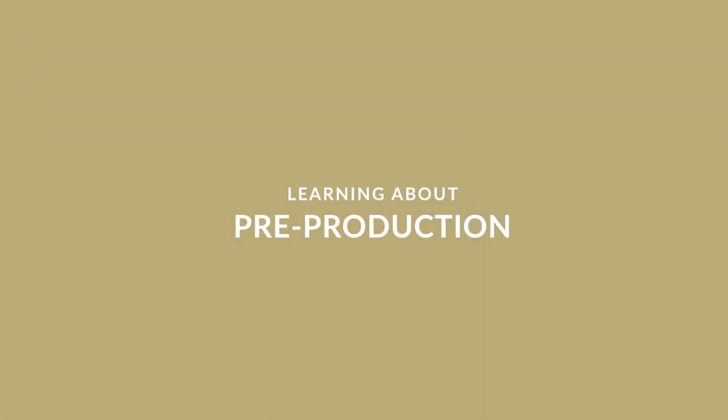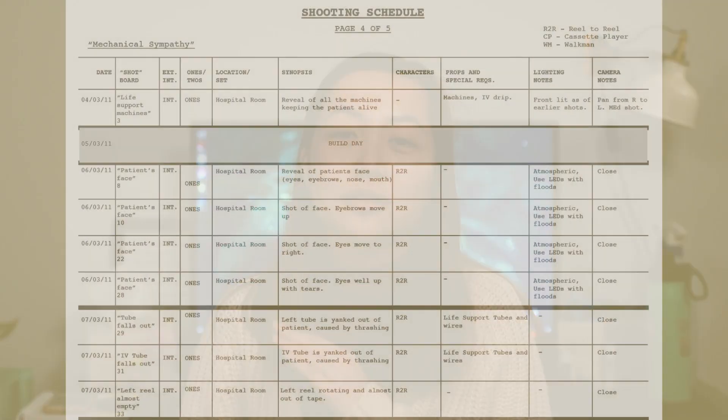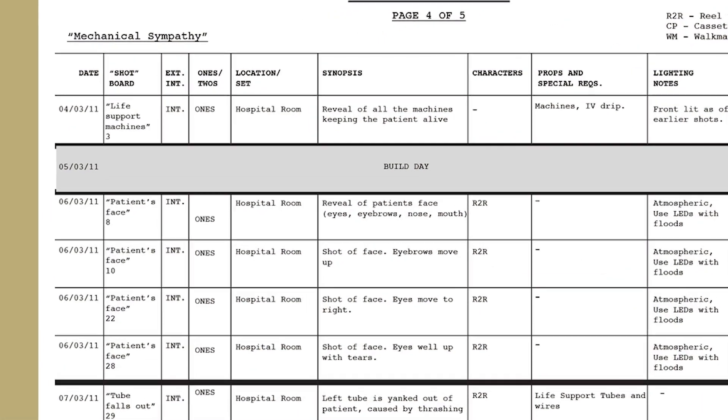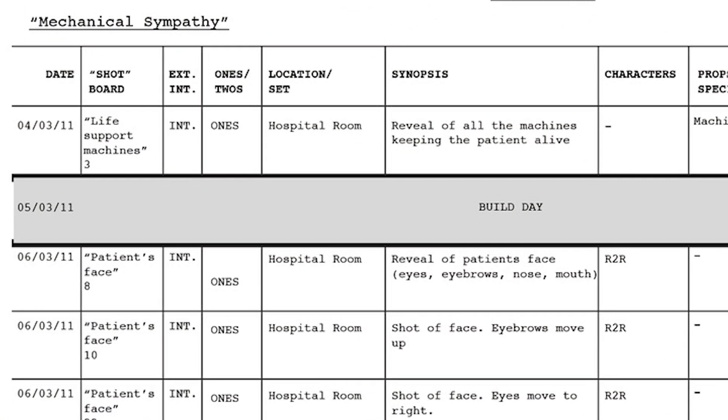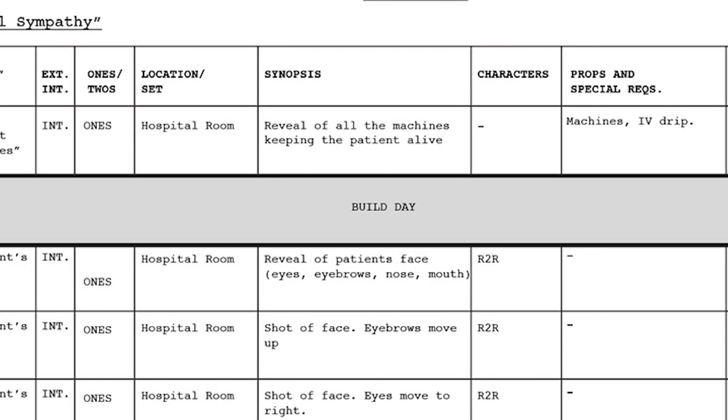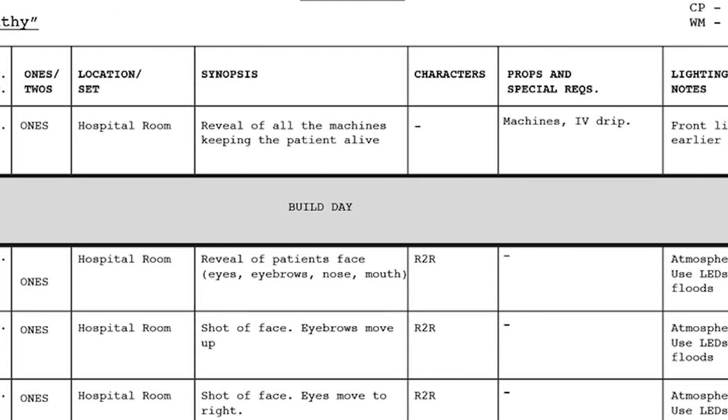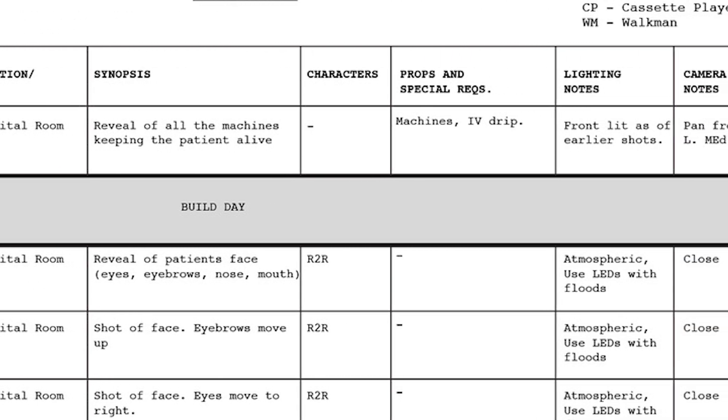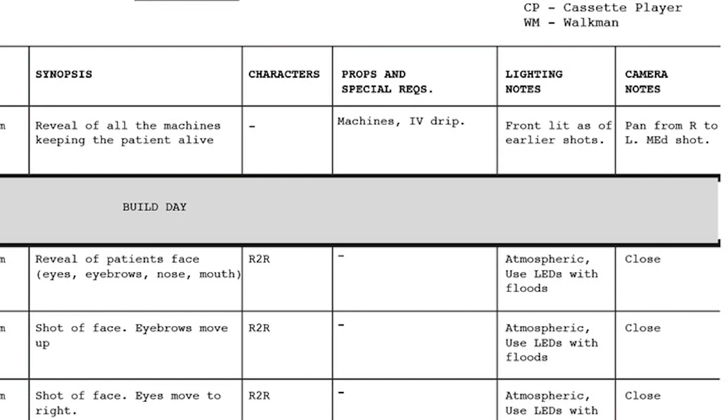Pre-production really just involves getting all the logistics together before you start shooting. I know it's really exciting — you have your script and you just want to turn on the camera and start filming. But before that, we want to go over some basics: the film schedule, the locations, who's going to be part of your film crew, what equipment and gear you'll need, and then obviously what you're going to shoot.